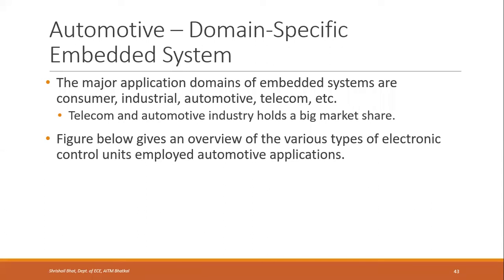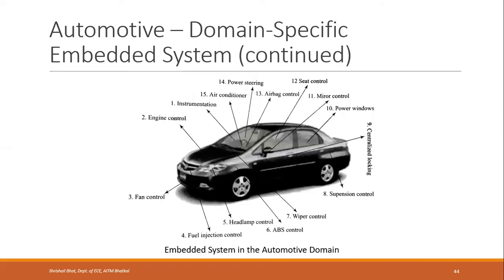The next example of an embedded system is a domain-specific one: the automotive domain. Major application domains for embedded systems include consumer electronics, industrial, automotive, telecom, networking, and healthcare. Telecom and automotive industries hold a big market share. This gives an idea of the different embedded systems used in the automotive domain.